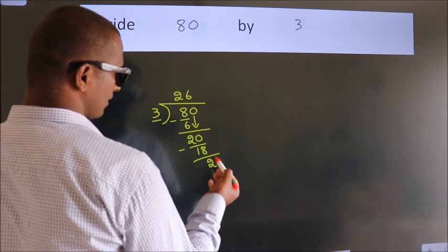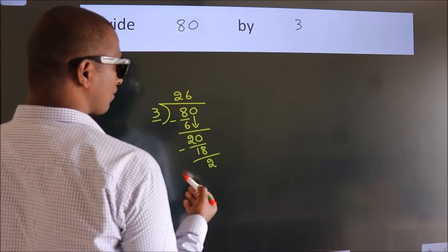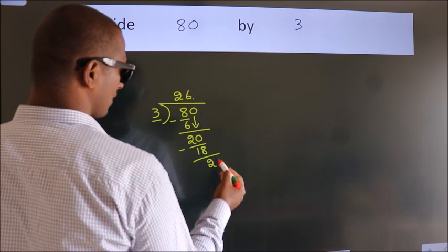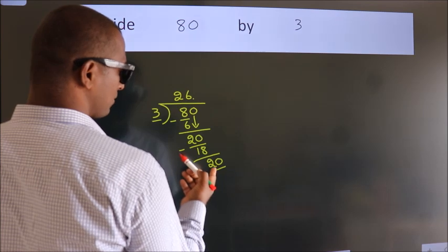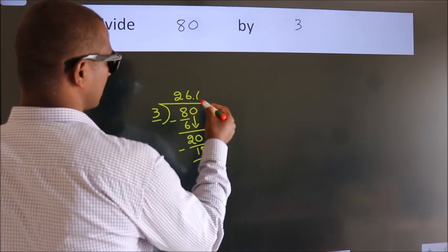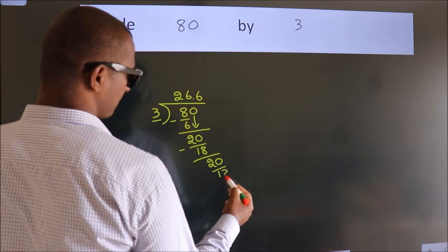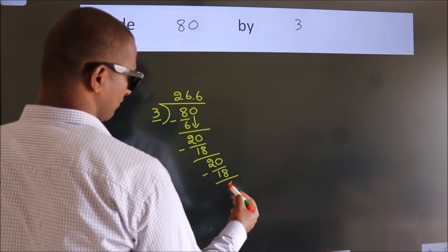After this, no more numbers to bring it down. So what we do is, we put dot, take 0. So 20. A number close to 20 in the 3 table is 3×6=18. Now we subtract. We get 2.